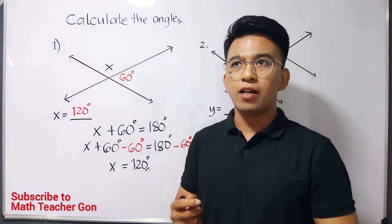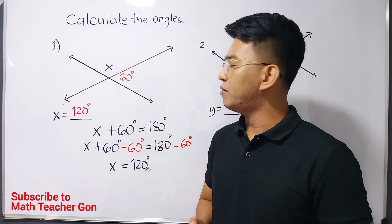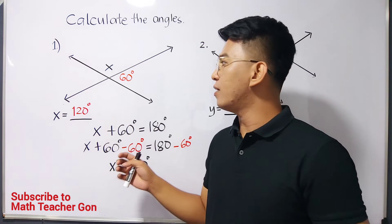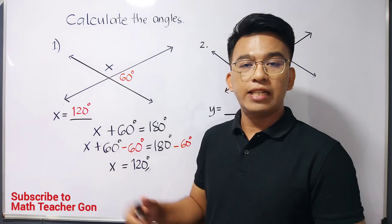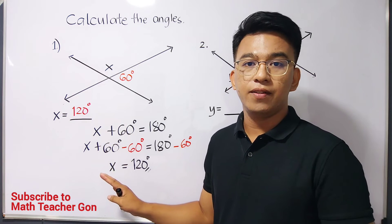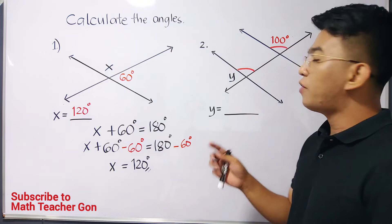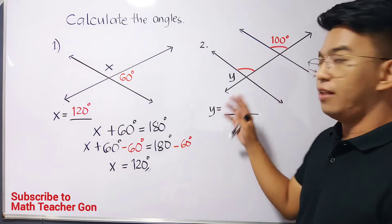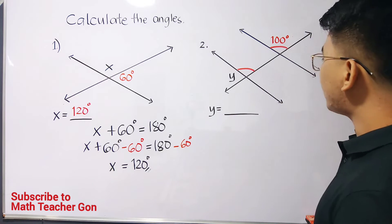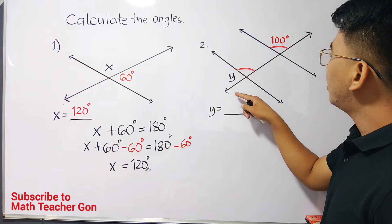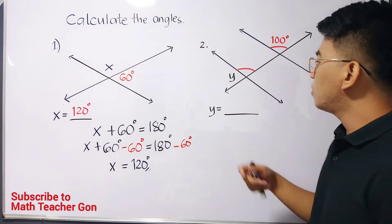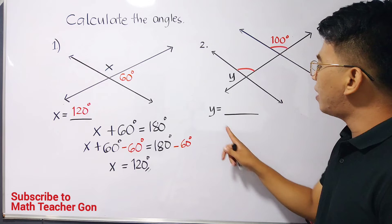Therefore guys, the value of x here in the first problem is simply 120 degrees. That's how you will solve this kind of problem. Actually, for those who are well-versed in terms of solving angles given this intersecting lines madali na itong part na ito. Then let's continue with item number 2. For item number 2, we are given these lines where in melting transversal line na nagkakot sa dalawang lines natin. So we are asked here to find the value of y.